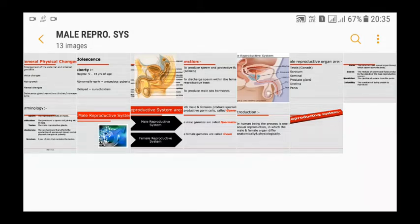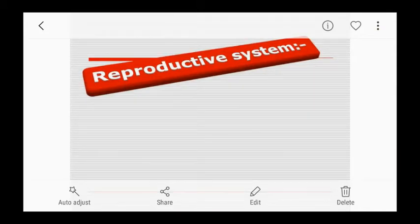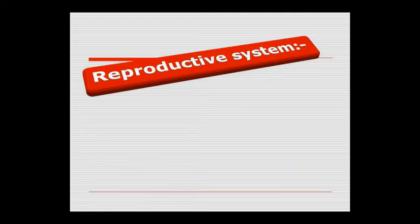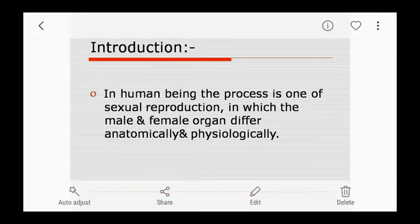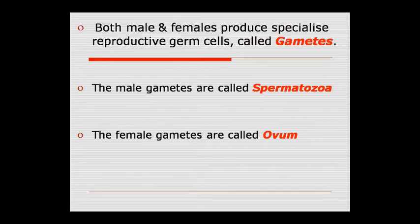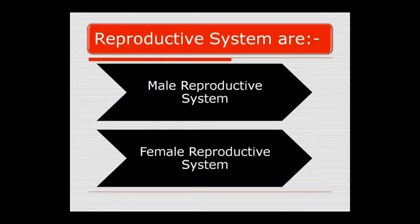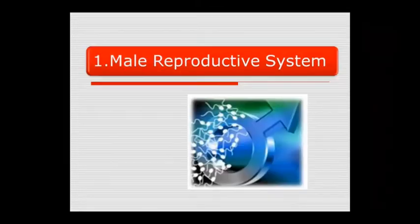Good morning class. This is our new anatomy class in which today we will start our new chapter — the first chapter, that is the male reproductive system. In human sexual reproduction, the male and female organs are anatomically and physiologically completely different. Two special reproductive cells are produced, which we call gametes. Male gametes are spermatozoa and female gametes are ova.